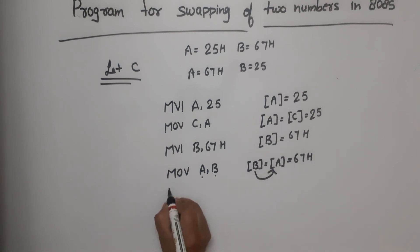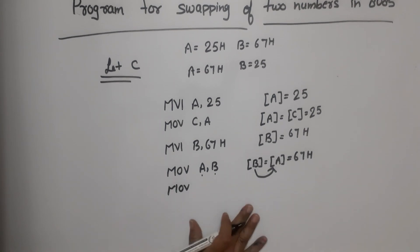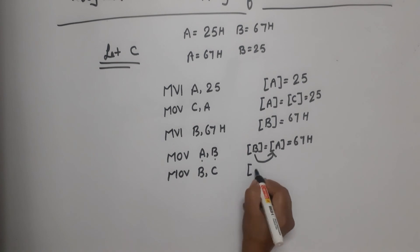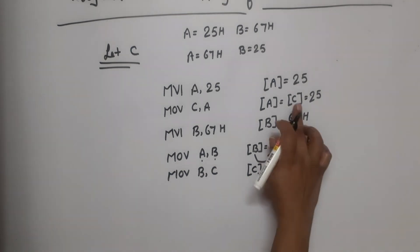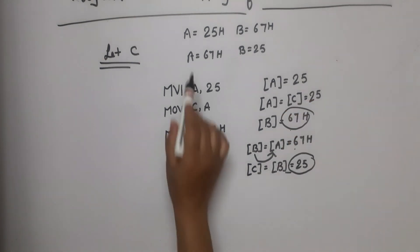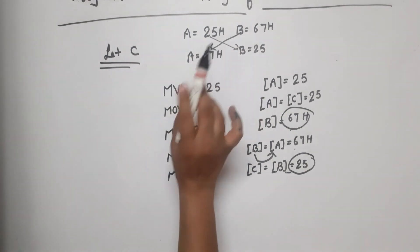Now what will we do? MOV B,C. That means that if this line is executed, what will happen? Content of C will copy where? Content of B. That means that content of C will copy in register B. That means what will be both values? Same. And what was the value of C? 25. We have swapped A's content to B and B's content to A.